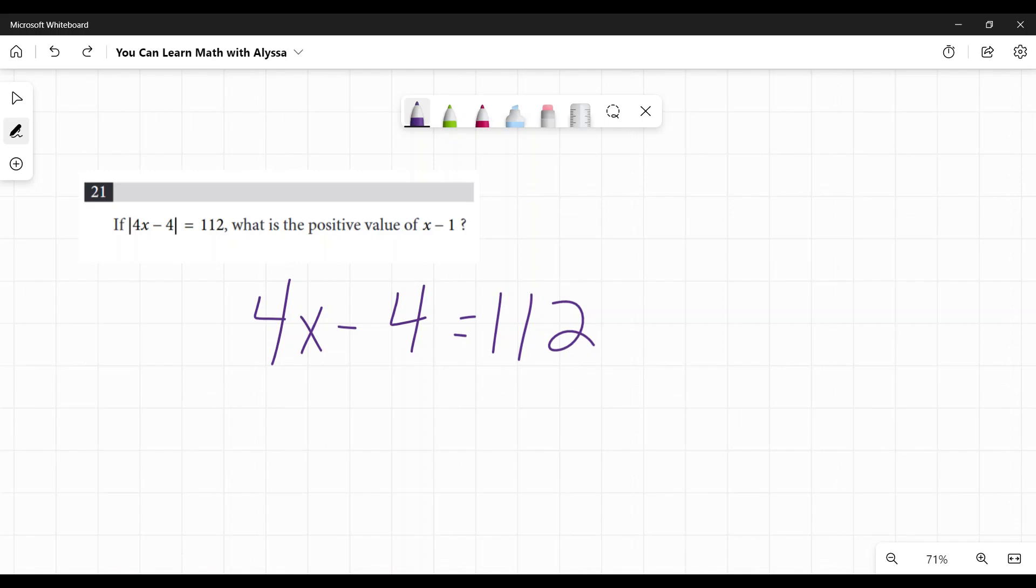Anyway, so to solve for this, 4x minus 4 equals the positive 112. I want to undo what's been done to x. First, I'm going to add 4 to both sides. And that gives me 4x is equal to 116.